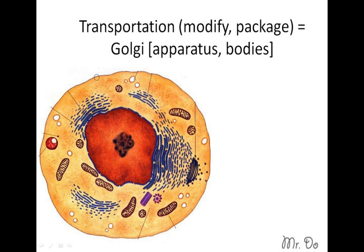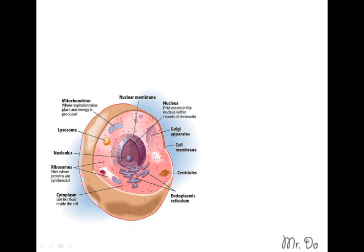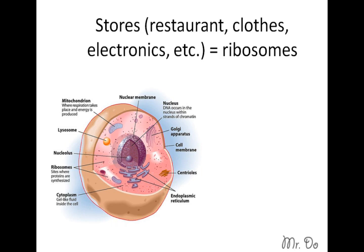The Golgi is responsible for transportation — it makes sure things get modified, packaged, and moved in and out. It's also called the Golgi apparatus or Golgi bodies. The Golgi is always near the outside of the cell and is responsible for packaging stuff. It sometimes looks similar to the ER too.